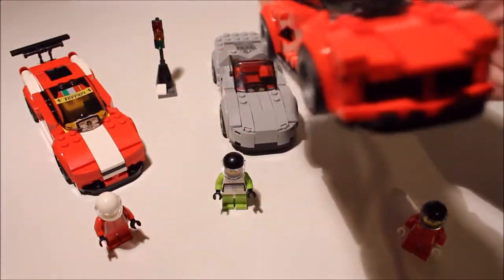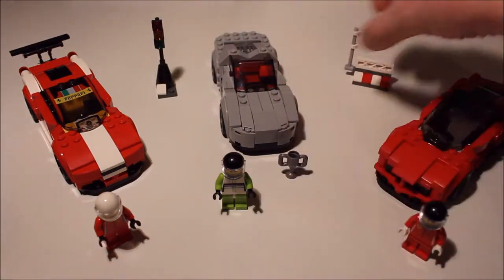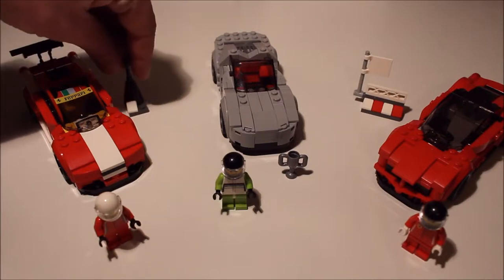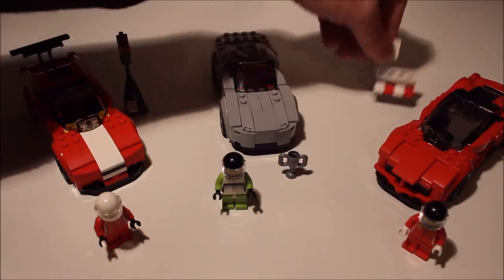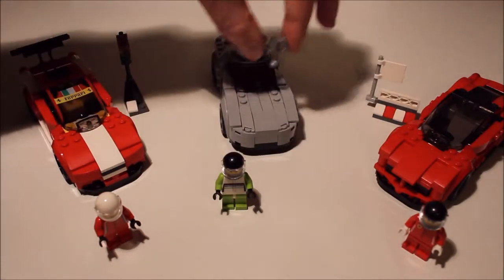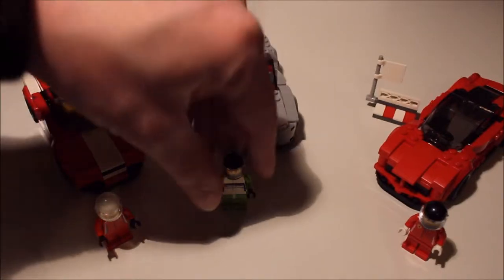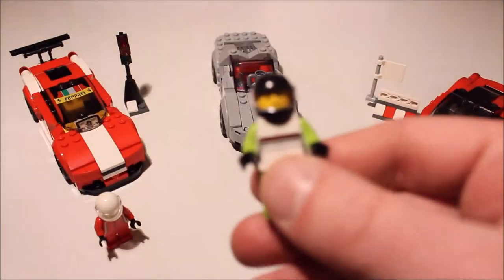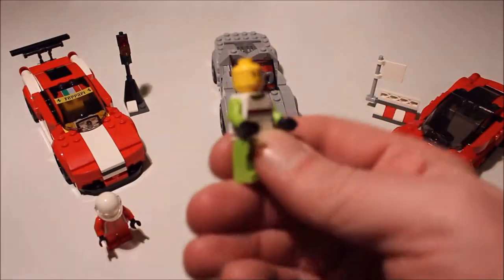They all come with one little attachment each. In this case it's the traffic lights, in this case it's this whatever it is, and in this case the car that won the race gets that little trophy.